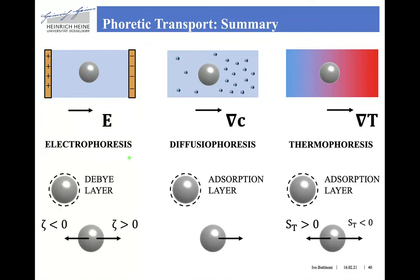For electrophoresis, the particle moves in the direction opposite to the electric field if its zeta potential is negative, while a positively charged particle follows the direction of the electric field. For diffusophoresis, transport always occurs up the concentration gradient.